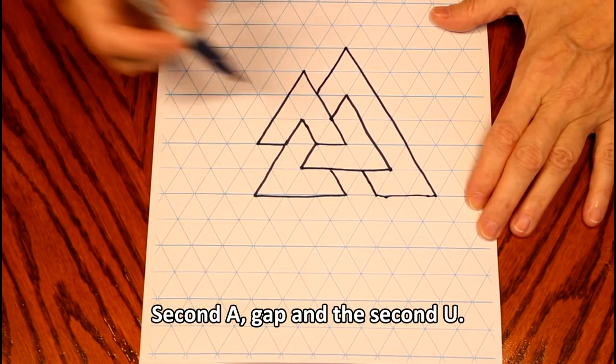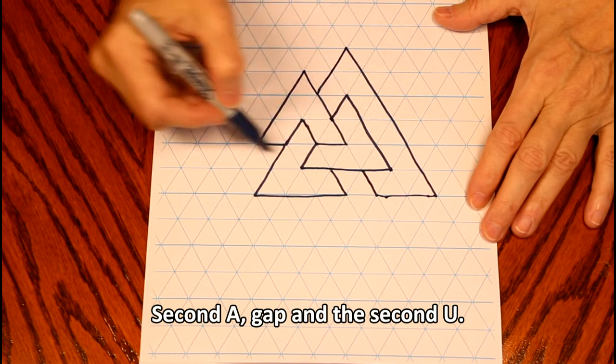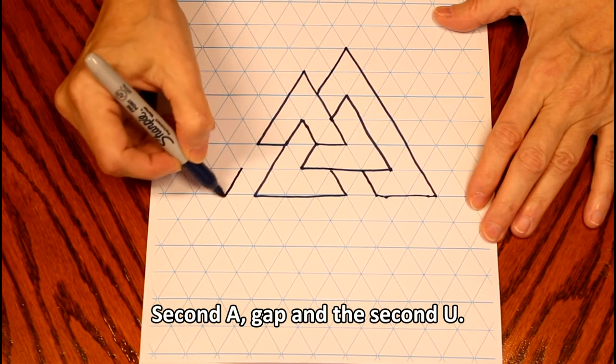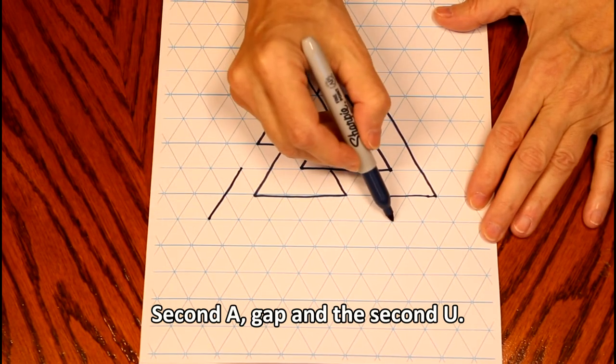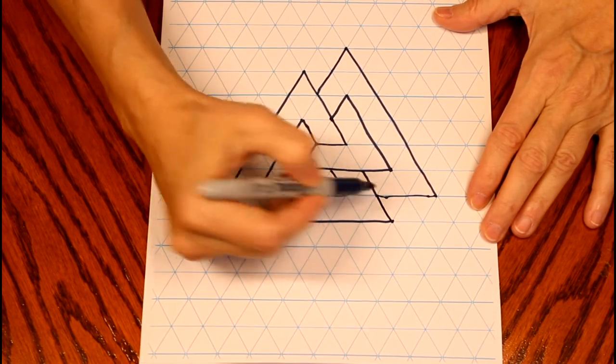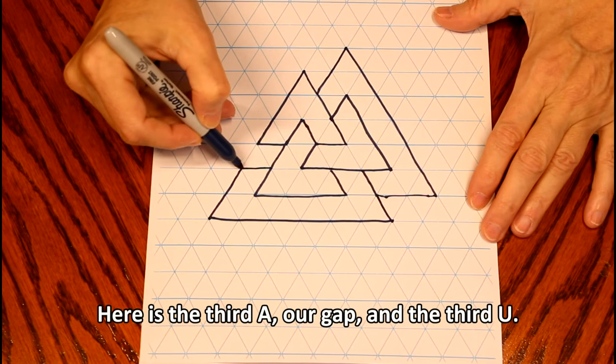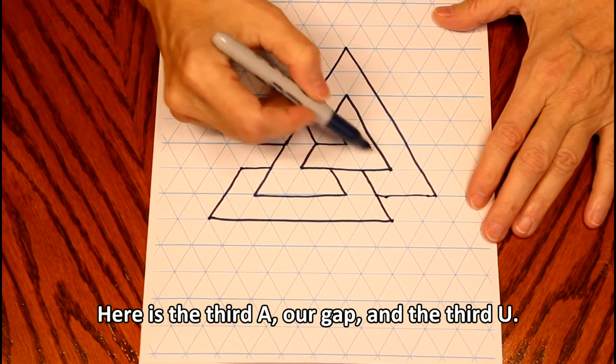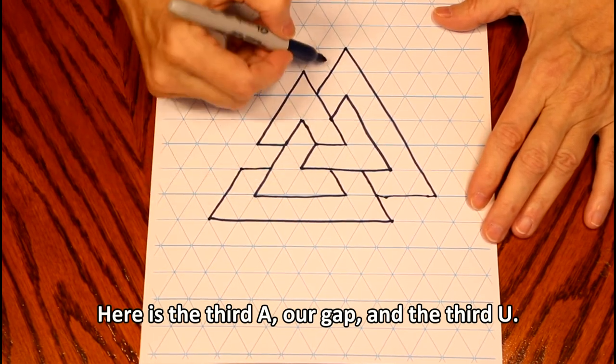Here is the second A, gap, and the U. Here is the third A, gap, and the third U.